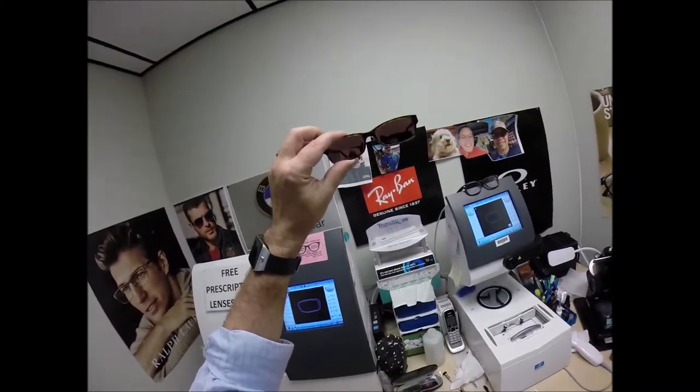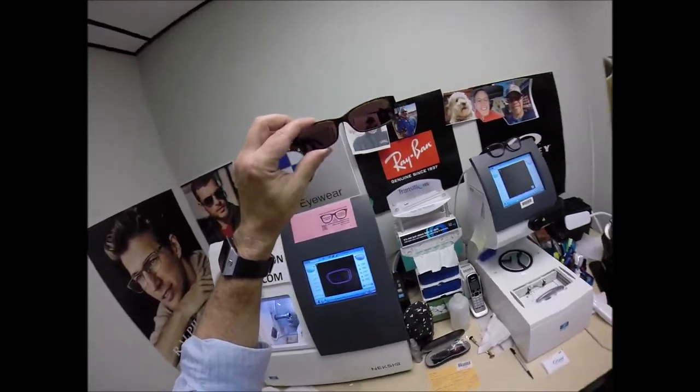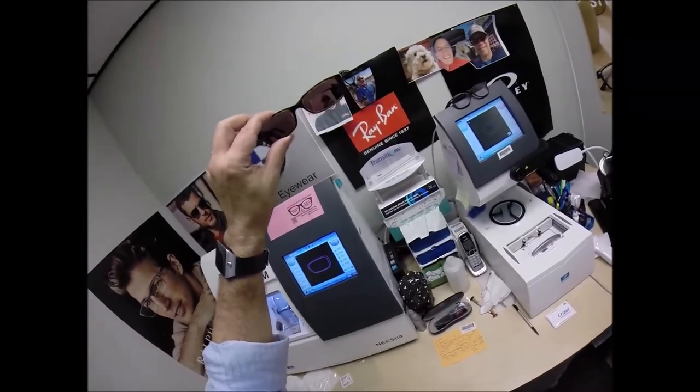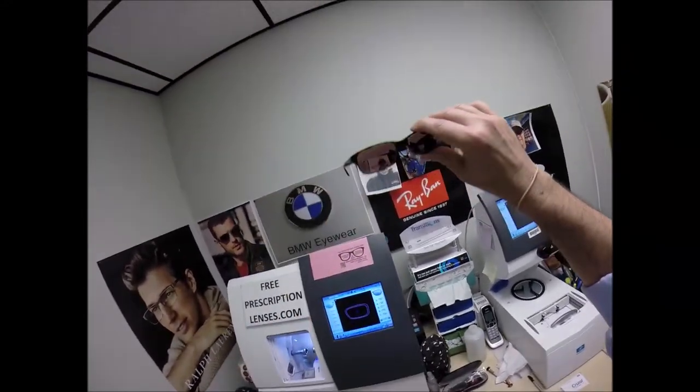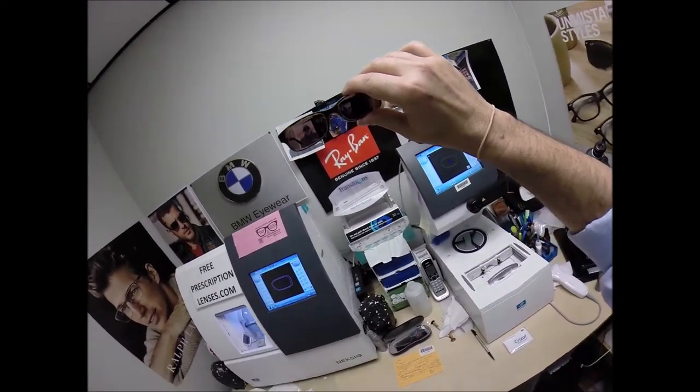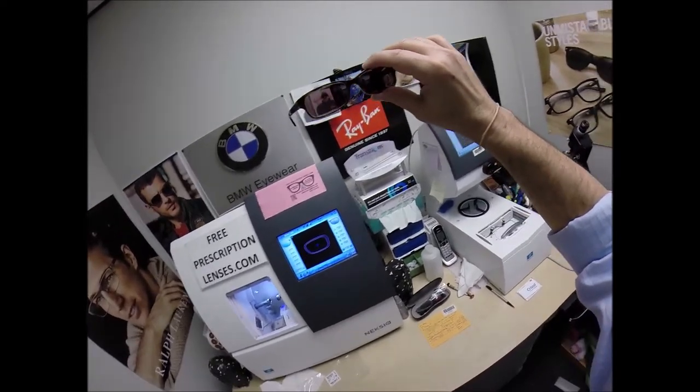So again, as I keep running my mouth and getting deeper and deeper in trouble, these will continue to lighten. But again, this is the Transitions Brown. You can also get them in gray and possibly even green. I need to check with the Verilux X. But I know you should be able to get them in gray or brown. You may even be able to get them in the Transitions Extra Active, as well as with the mirror colors. You can also do that too.